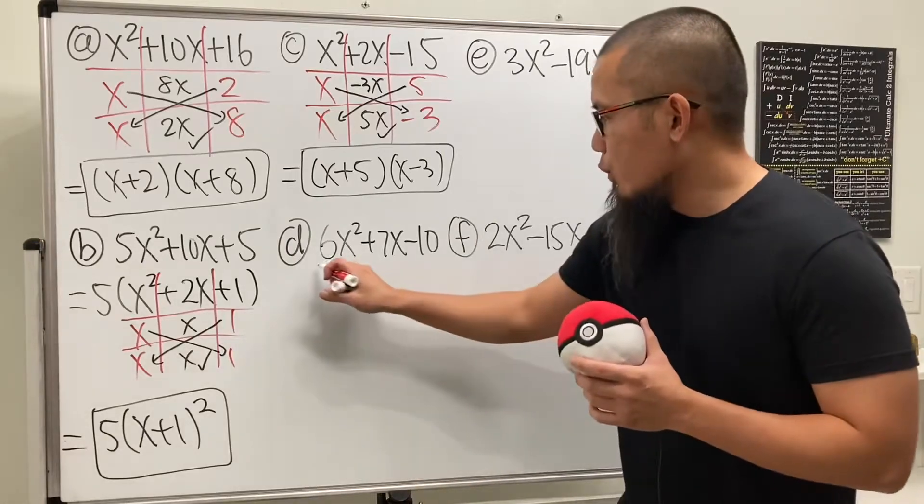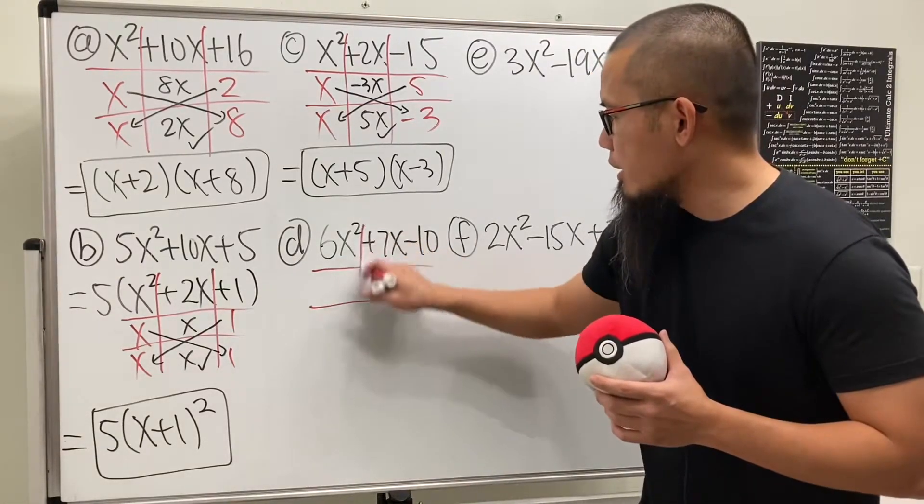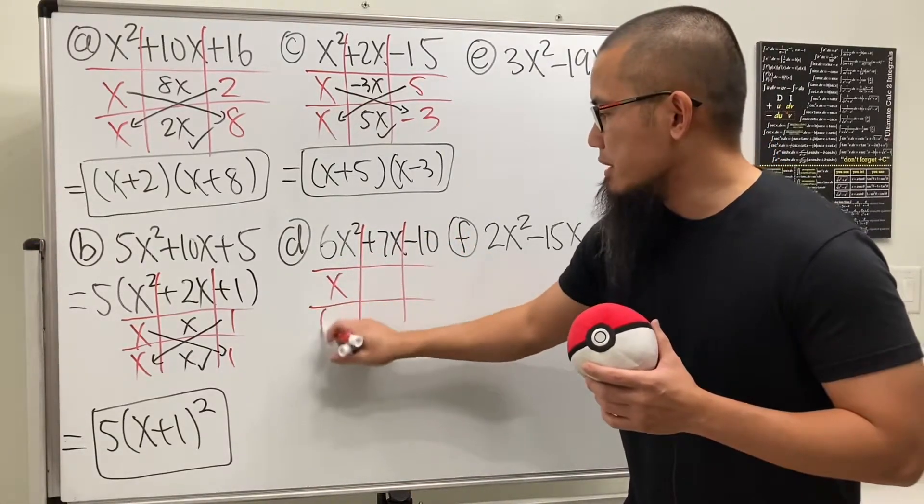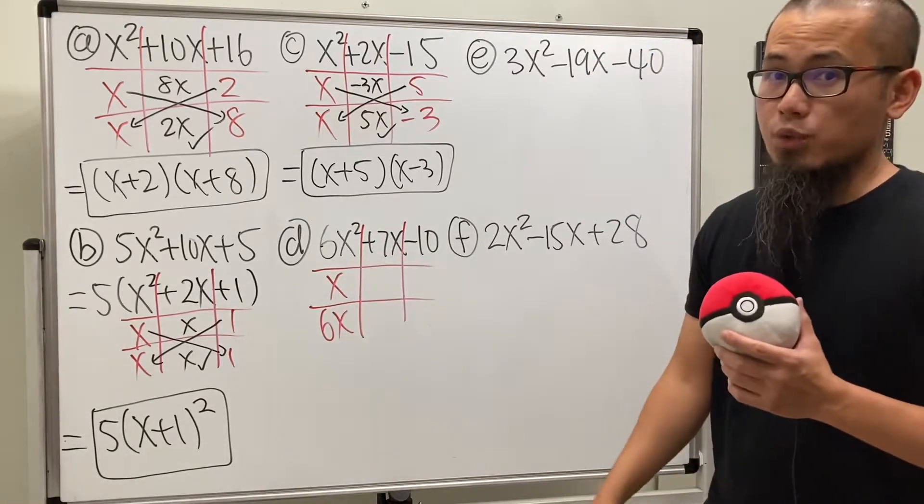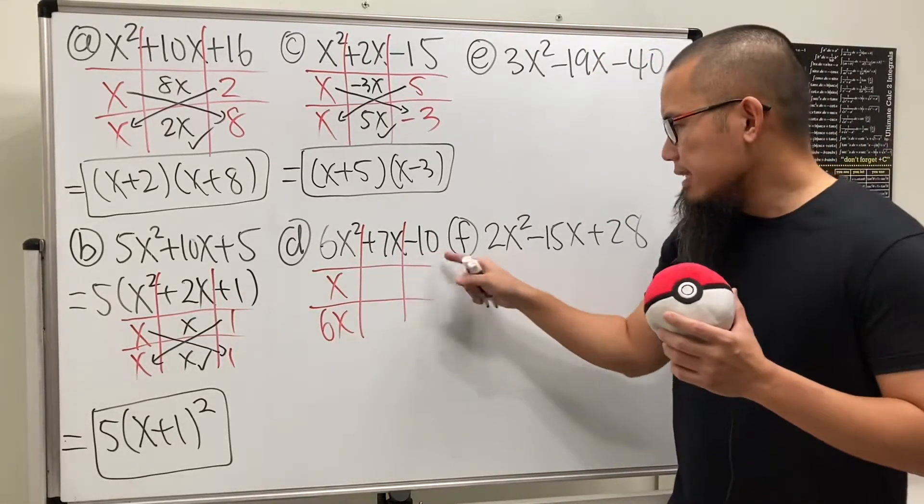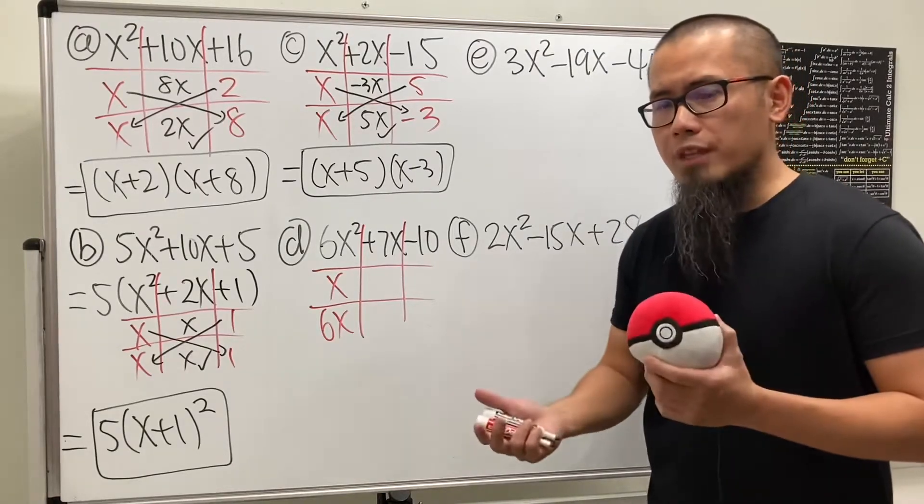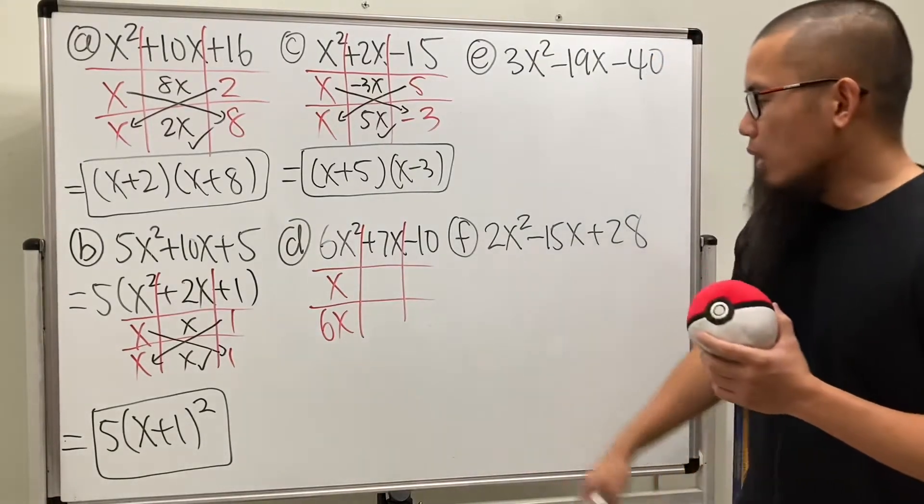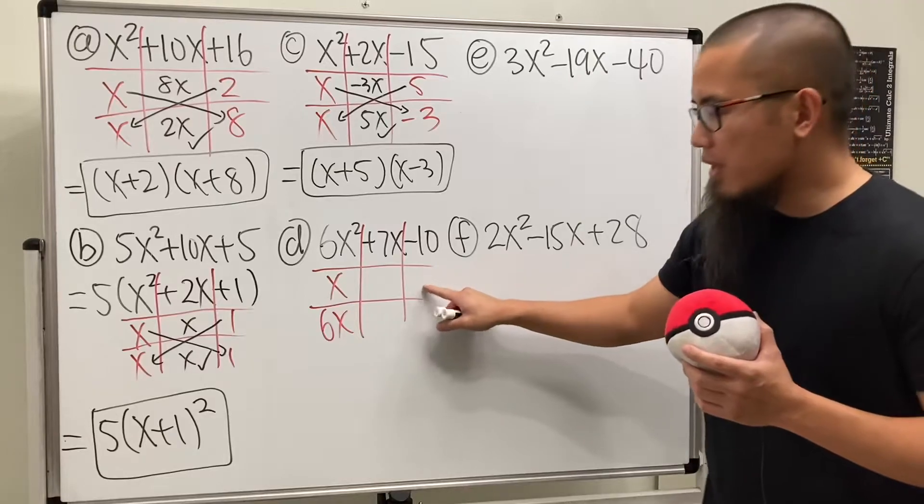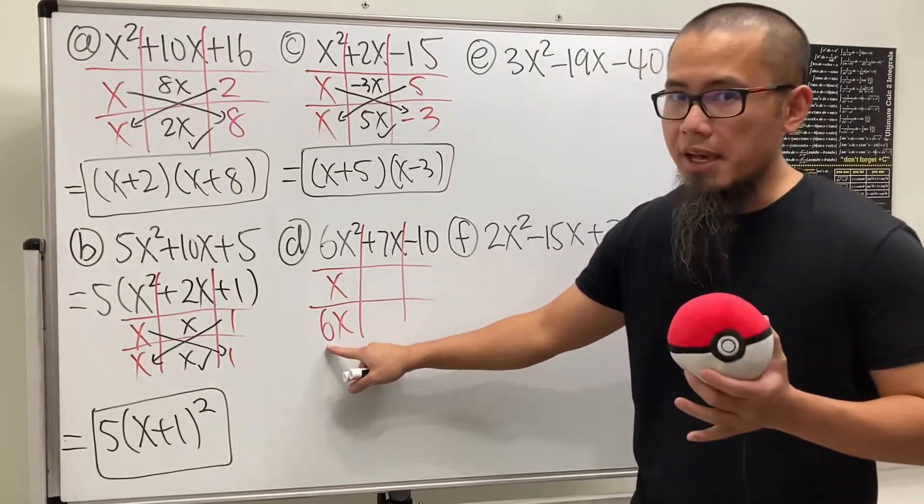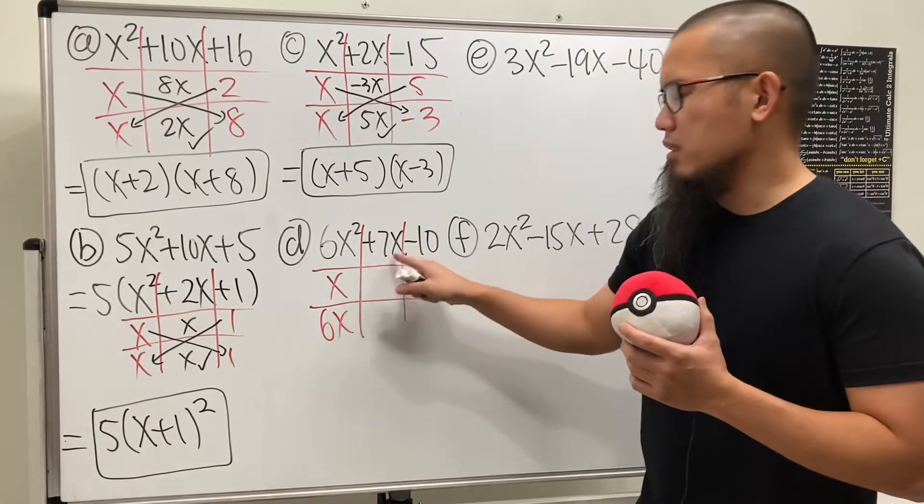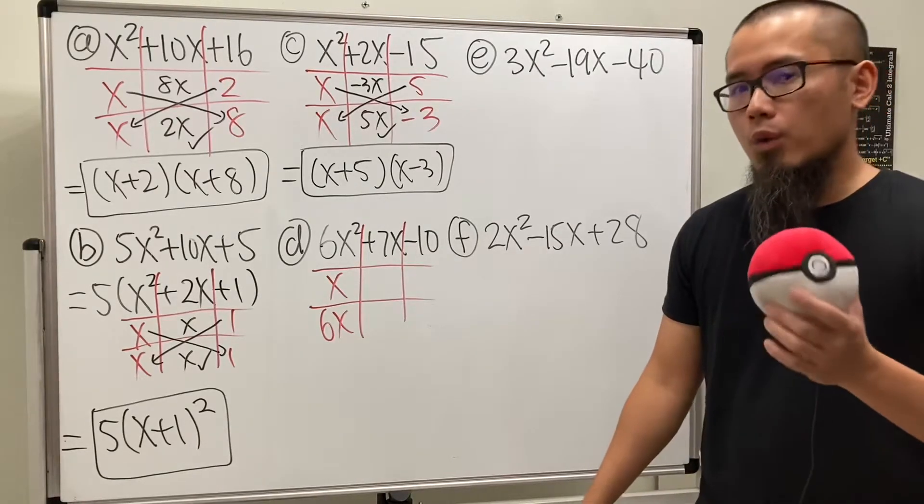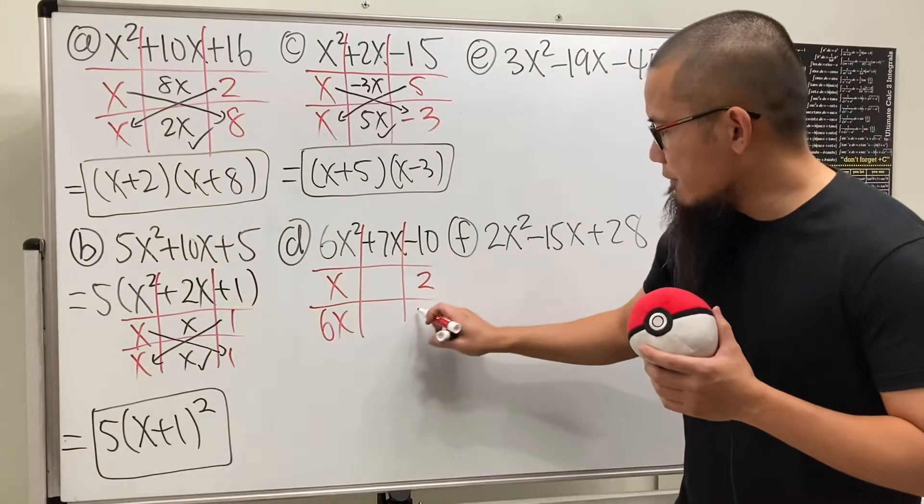Now check this out. We are actually going to do the following. Let's go ahead and put down x times 6x. That will give us 6x squared. And now to get negative 10, we are going to use 5 and 2. But one of them should be negative, right? Well, I'm not going to put down 5 here because 5 times 6x will be 30x. That will be too big from the positive 7x.